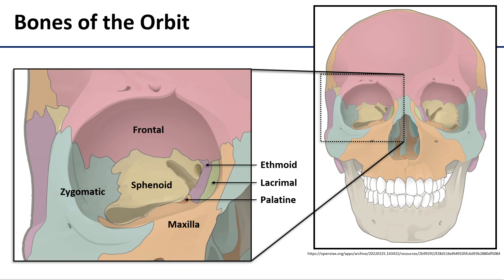The lateral wall is formed almost entirely by the zygomatic bone, with a little bit of a contribution from the sphenoid.